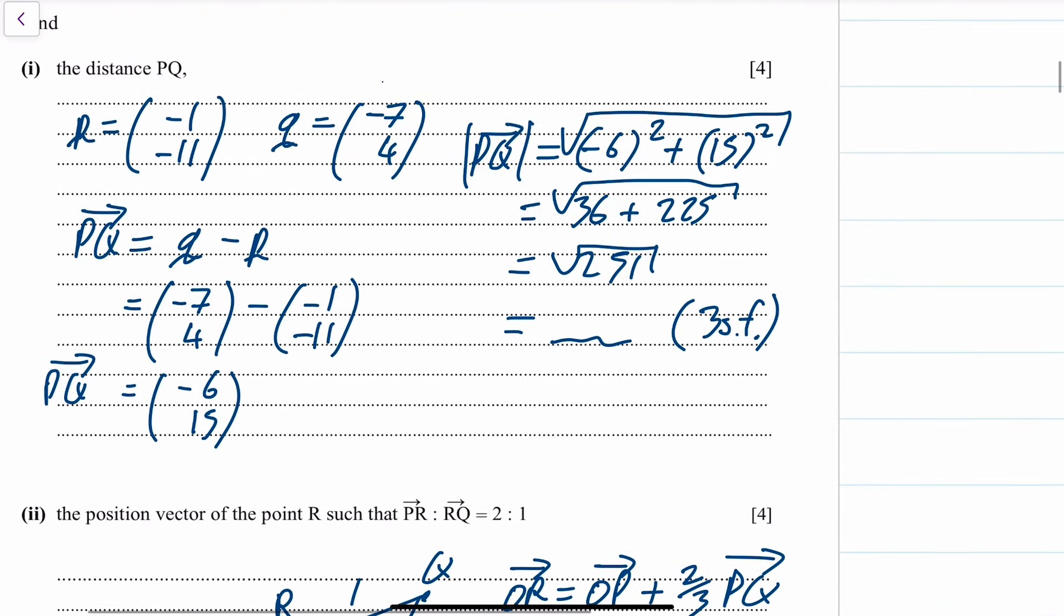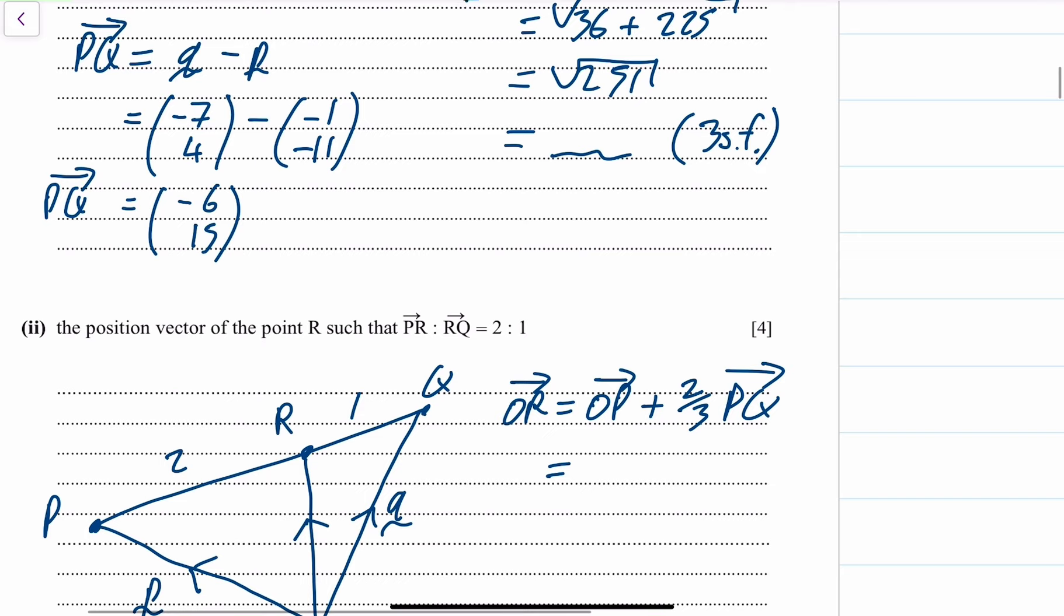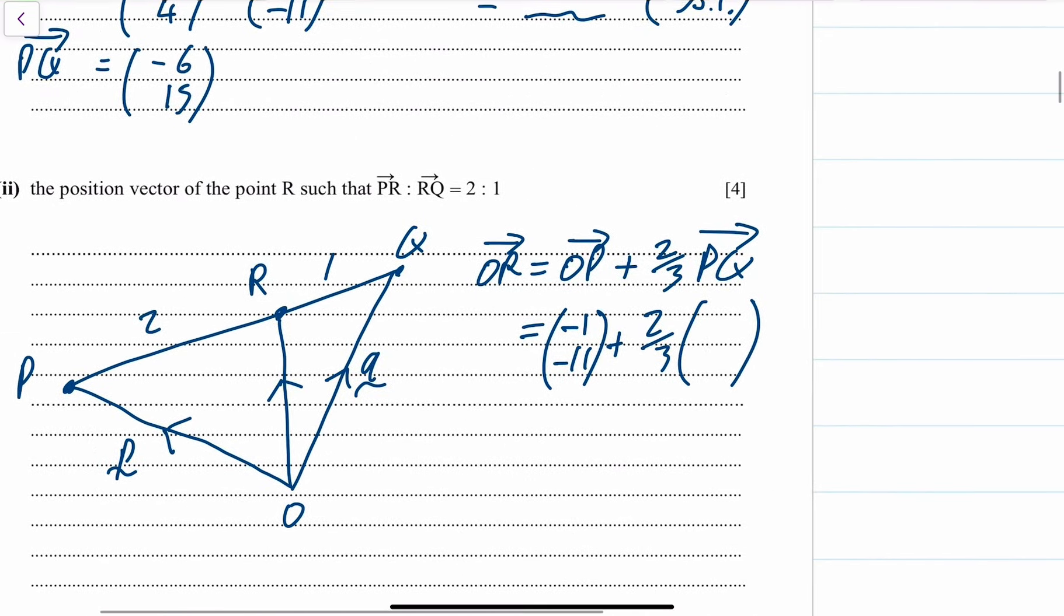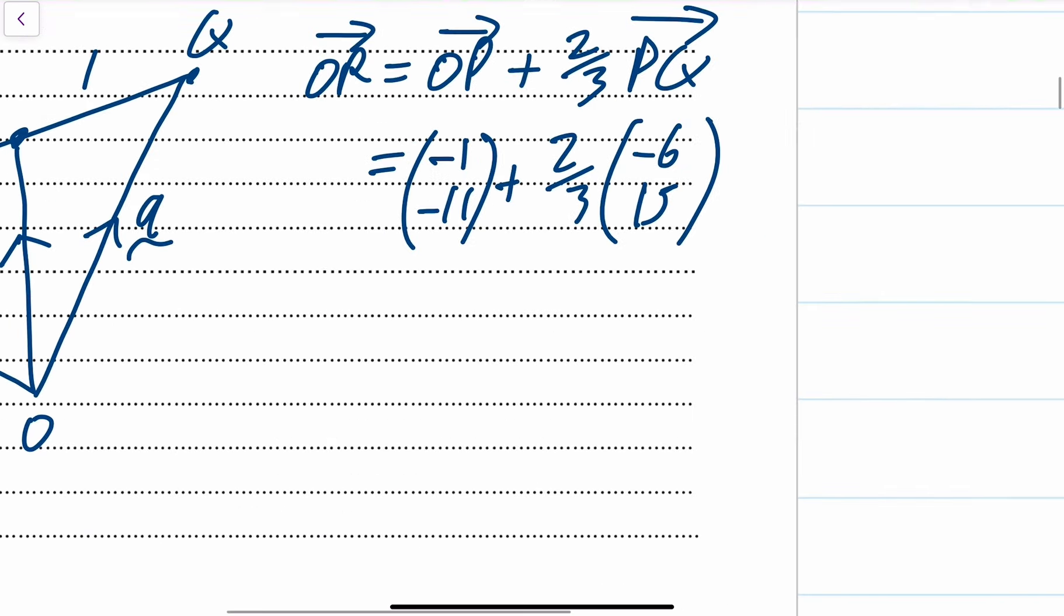O to P, or the vector P, that was minus 1 minus 11. And then two thirds of our PQ. PQ was minus 6, 15. Let's work that out.